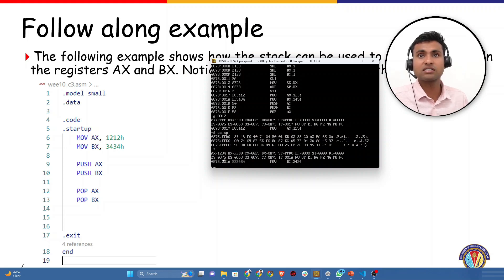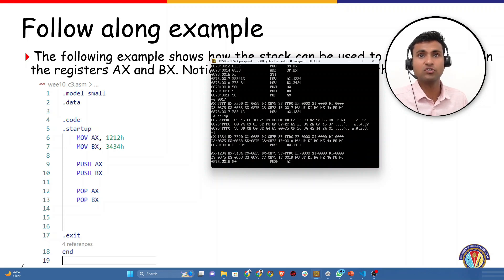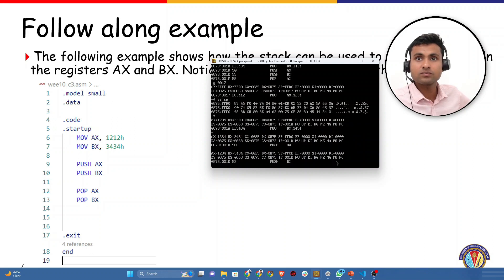Let's execute the next operation, which is move AX comma 1234. In AX, 1234 has come. In BX, 3434 is there. Now we'll push the AX. Once we push the AX, at which memory location do we expect this to go? The location pointed by stack segment colon stack pointer, 875 colon FFD0.